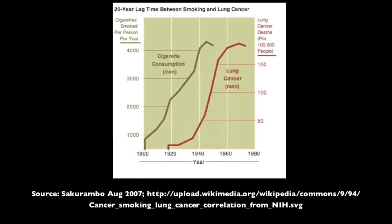In other words, when the cigarettes smoked per person per year are relatively high, the lung cancer deaths per 100,000 people are also relatively high. You can see that in this graph.